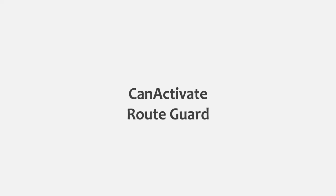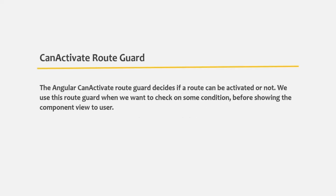In the last lecture we implemented a very simple auth service in our Angular application. From this lecture we are going to learn how we can implement route guards in Angular, what each route guard is used for, and we are going to start with the canActivate route guard. The canActivate route guard decides if a route can be activated or not — we use this route guard when we want to check some condition before showing the component view to the user.